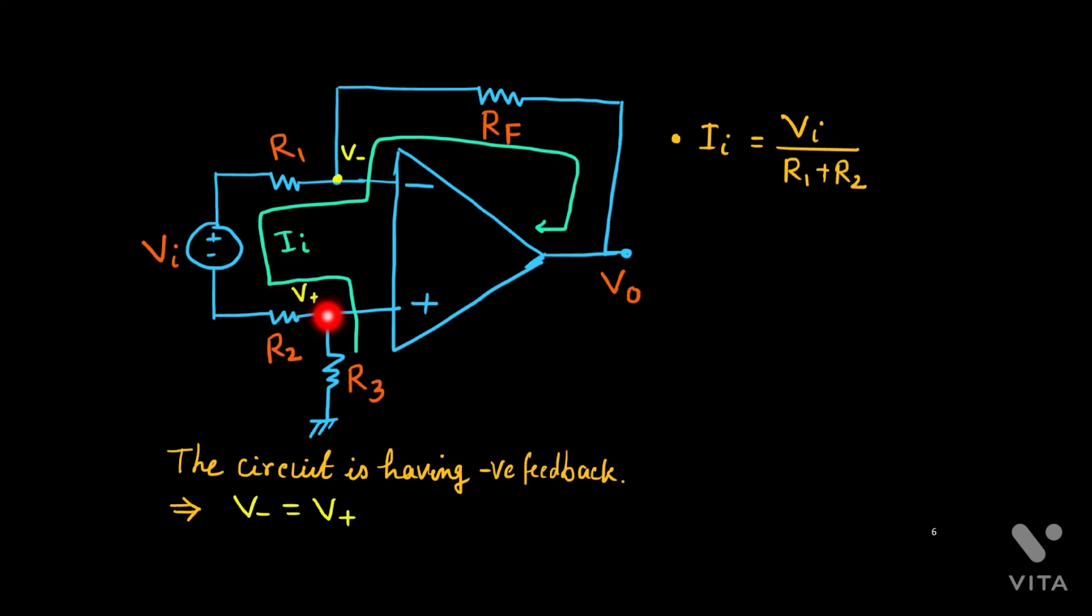So this current ii is simply the Vi upon R1 plus R2. So this you can also compute from this end to this end, the current flow. This is your V+. Then this potential is Vi added, and this is subtracted. So V+ plus Vi minus V- upon R1 plus R2. Now, as it is V+ equal to V-, so we are getting this one.